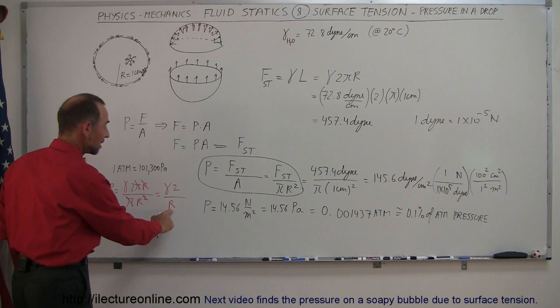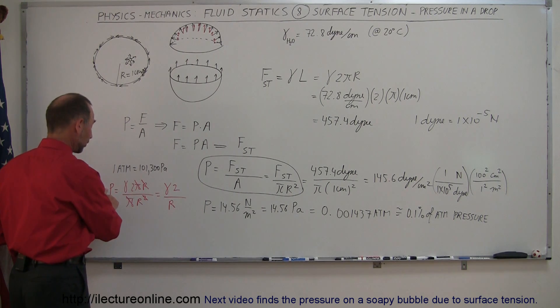Notice that as the radius gets smaller, the pressure will get larger. If I take 1/10 the radius, it'll be 10 times the pressure. Well, 1/100 the radius, 100 times the pressure.